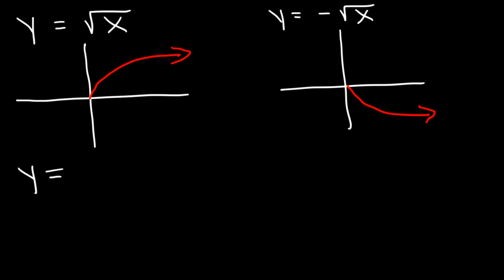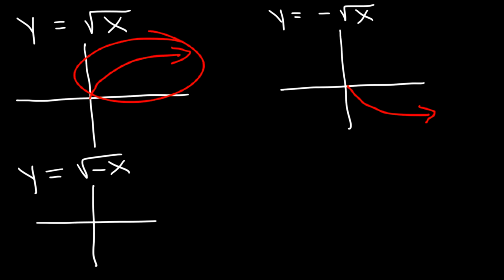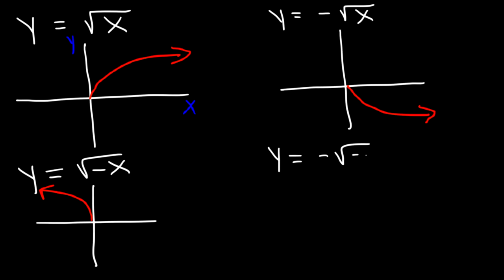What if we put a negative on the inside of the radical? Relative to the original function, it's going to reflect over the y-axis. And if we have a negative on both the outside and the inside, then relative to the parent function, it's going to reflect over the origin — it's going to look like that.